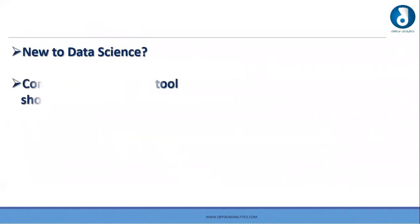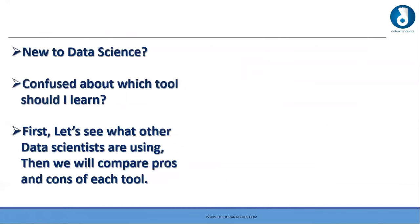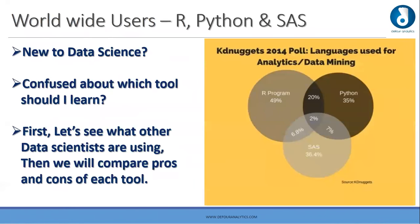Regarding which tool to use, a study conducted by KD Nuggets found that 49% of users use R, 35% use Python, and 36.4% use SAS. Only 2% of people use all three programs. Let's see what data scientists are using and compare the pros and cons of each tool.